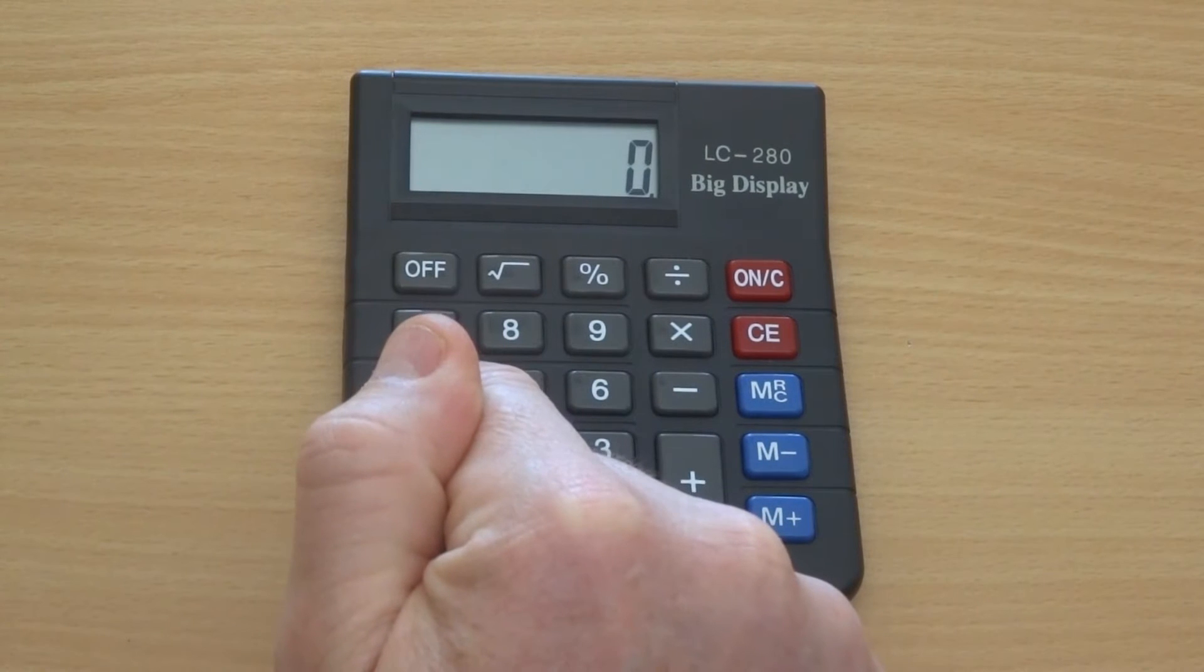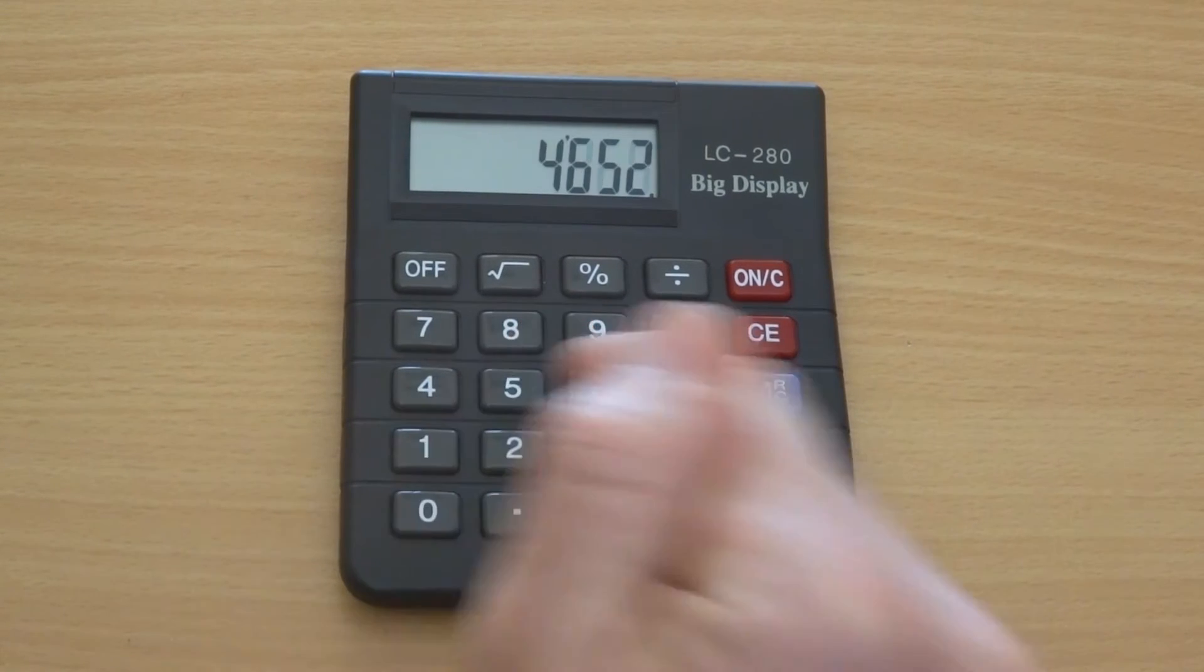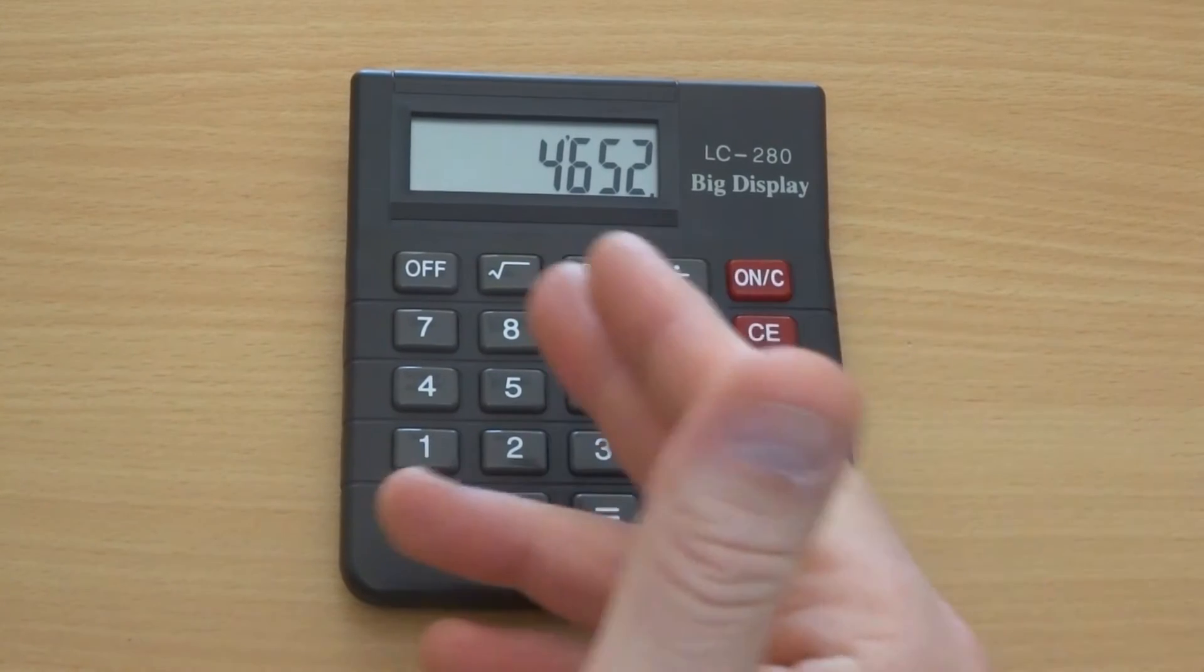Basically what you do is you enter a number. I'm going to enter a four-digit number, so I'm going for 4652. You can make the numbers longer or shorter, but we're going for a four-digit number.